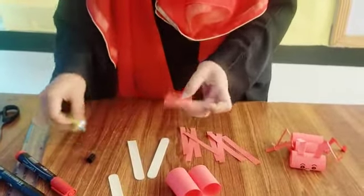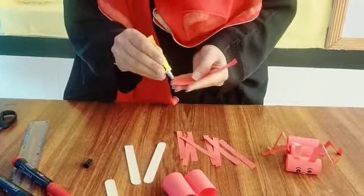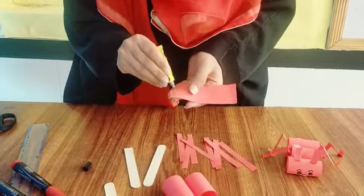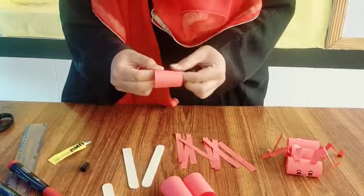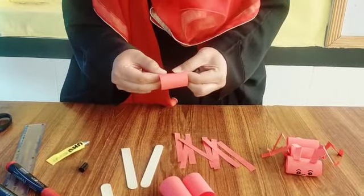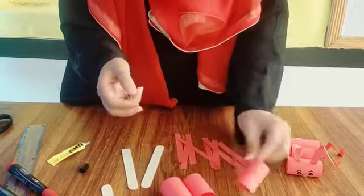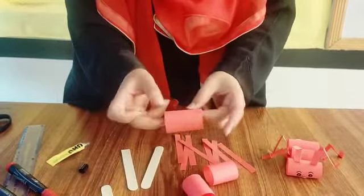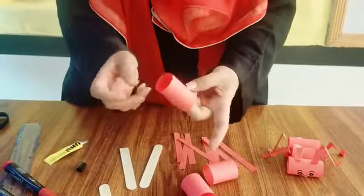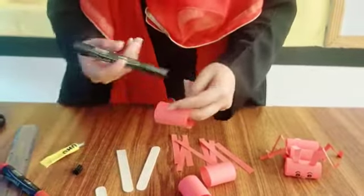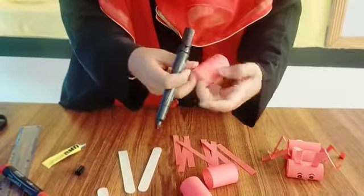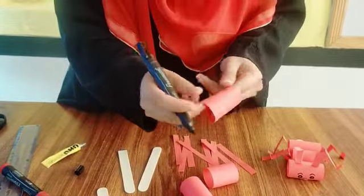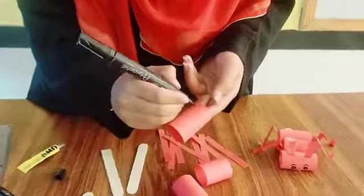And the last one... Now the first circle, this one, we will use as the face of the ant. What we do now - we take a black marker and we will draw eyes on the ant. Here I'm going to draw...